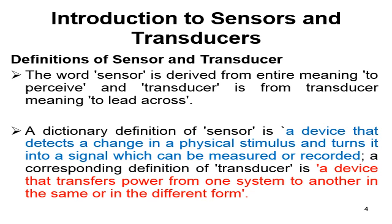The corresponding definition for a Transducer is: a device that transfers power from one system to another in the same form or in a different form. So, a transducer can convert energy from one form to another. Its function is to transfer energy or power from one system to another — either in the same form or in a different form.